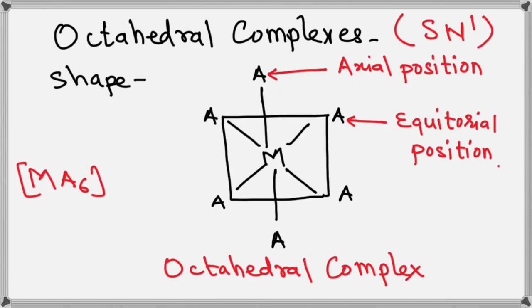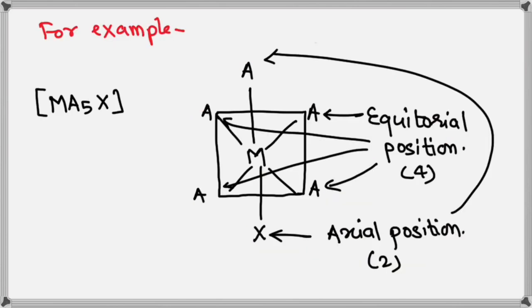So to understand that, see the shape of octahedral complex. There are two positions. First, axial position and this one is also axial position. These four positions are equatorial positions, right? So in this case, this X is located at axial position.